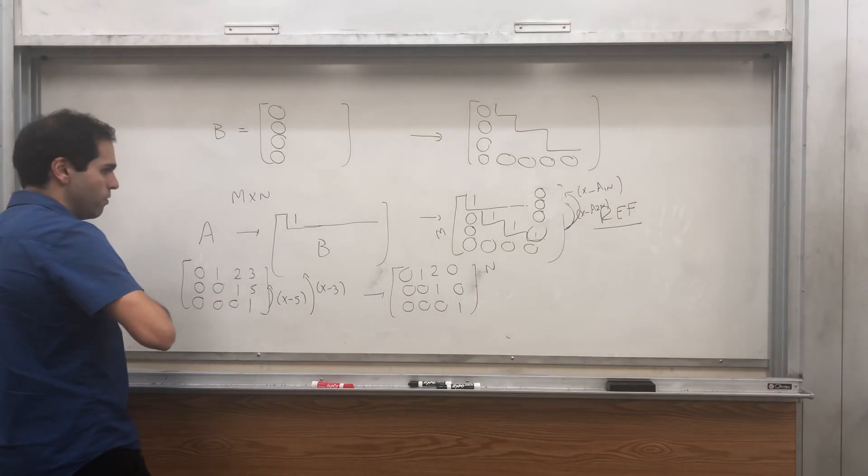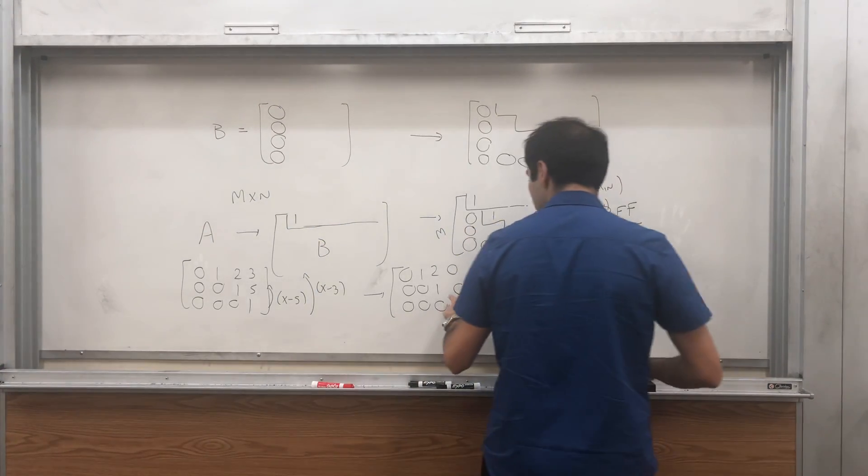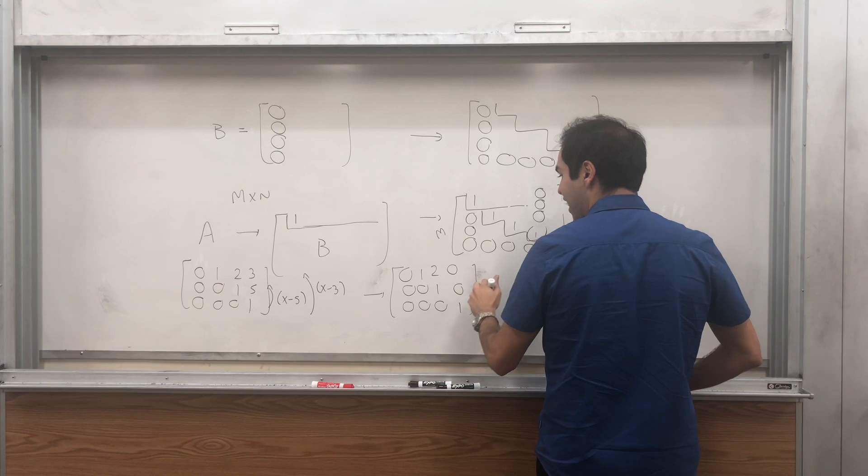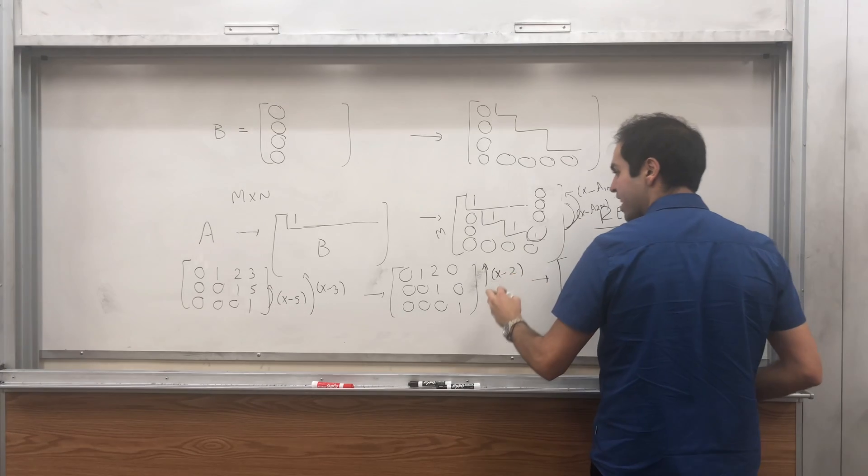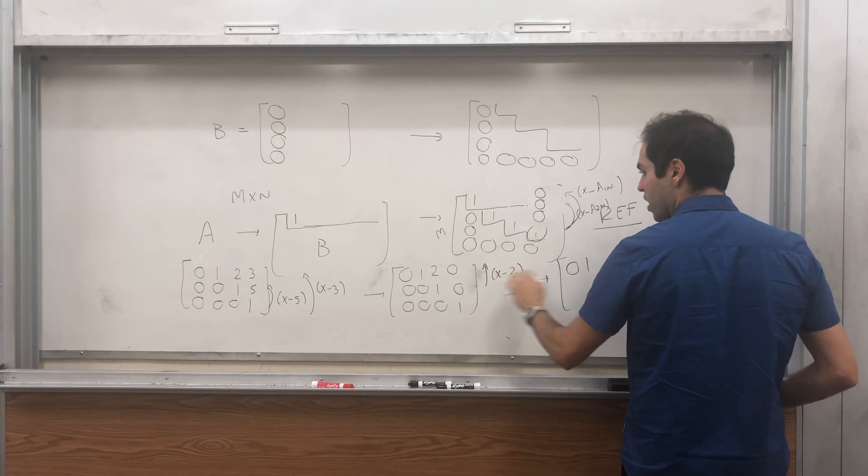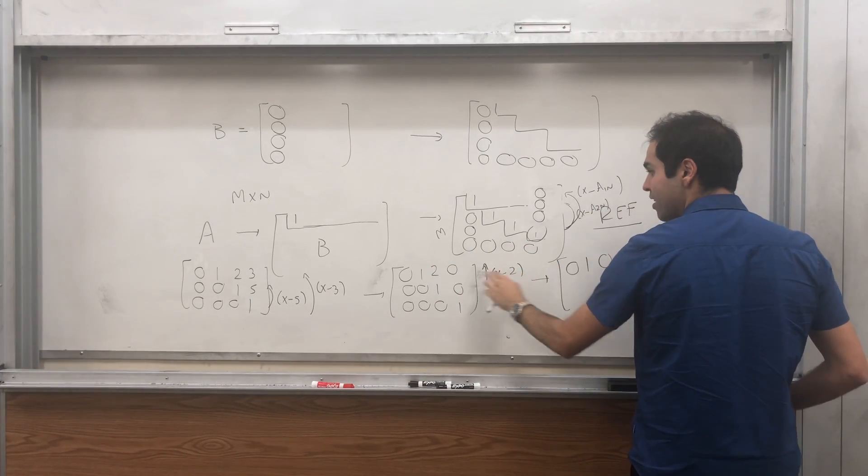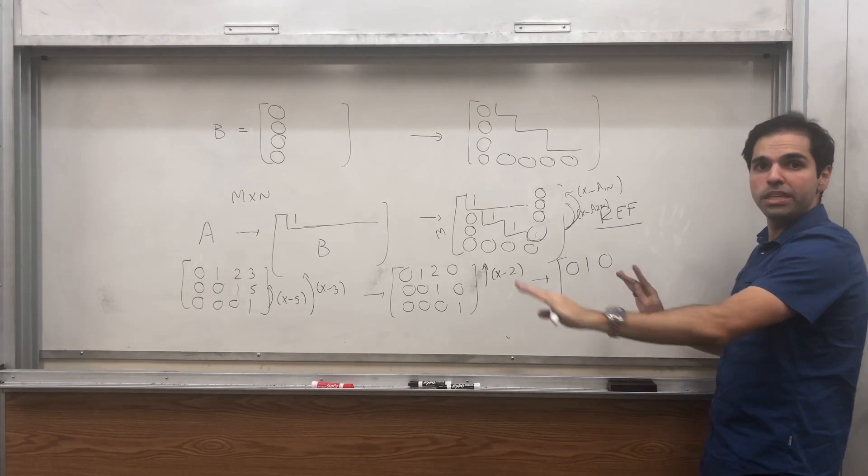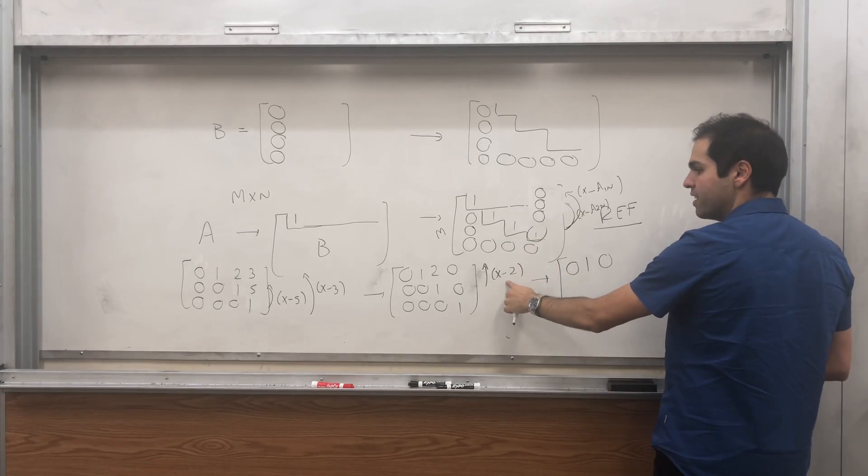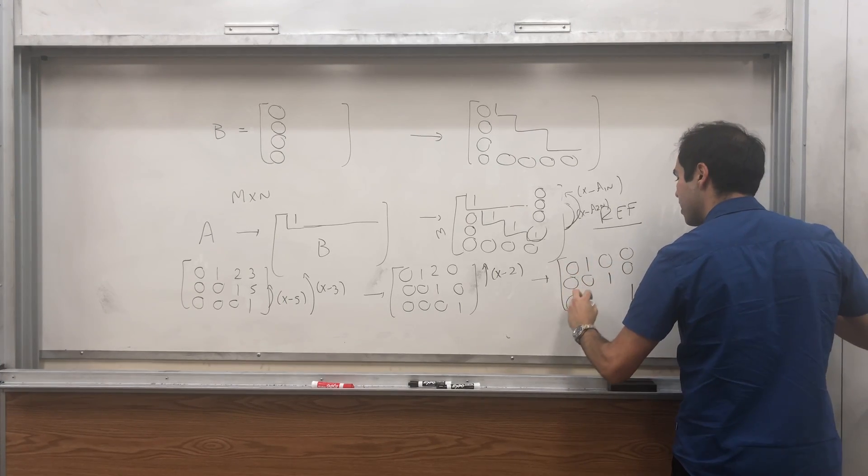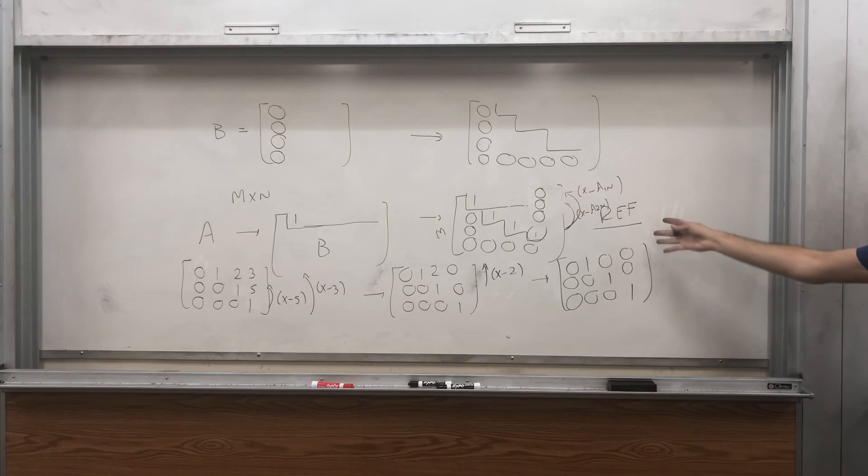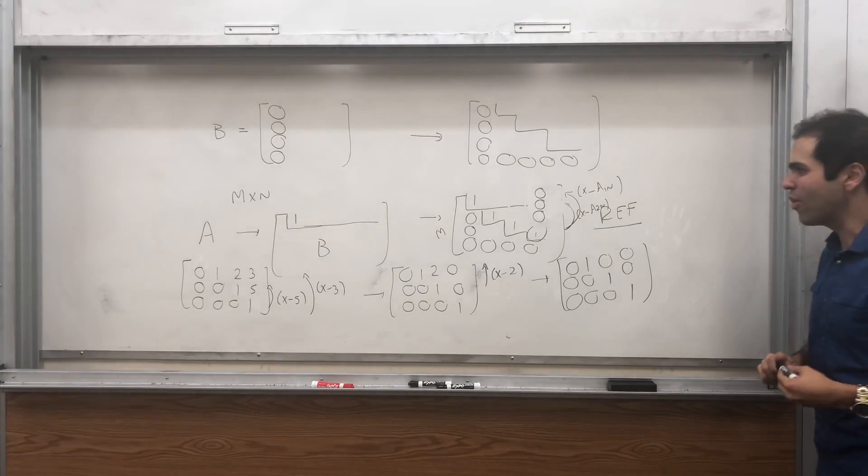So in this example, what would you do? You would subtract 2 times the second row from the first row, and you would get 0, 1, this becomes 0, and those 0s, they rest in peace. You're completely unaffected by this row operation. And then you are left with exactly what you want, something that is in reduced row echelon form.